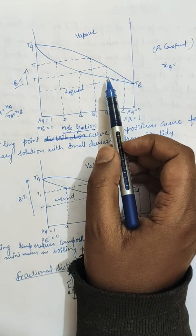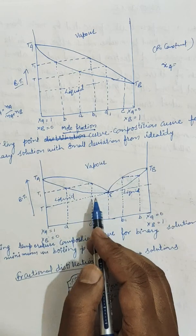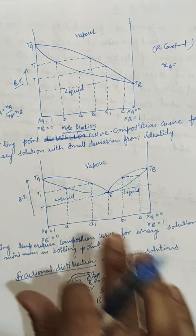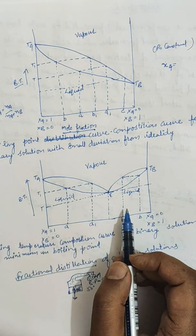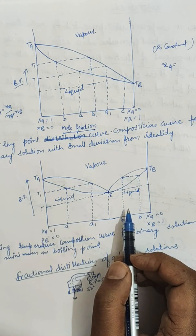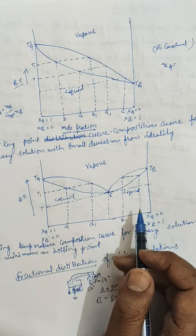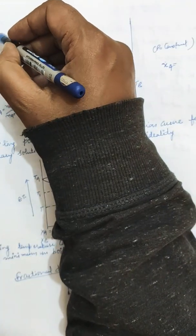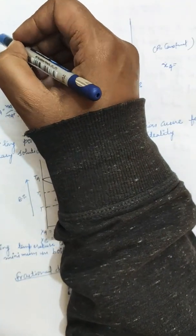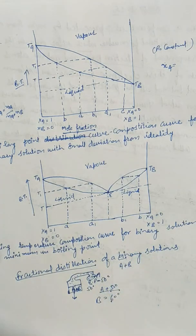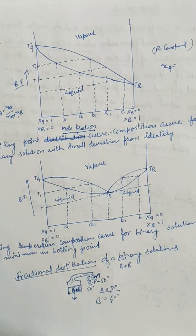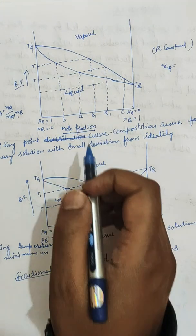There are three types of binary solutions: solutions with small deviation from ideal behavior showing a minimum in boiling point, and solutions showing a maximum in the boiling point. Ideal solutions are those where delta V mixing and delta H mixing are zero, they obey Raoult's law, and they have particular values of delta G and delta S.